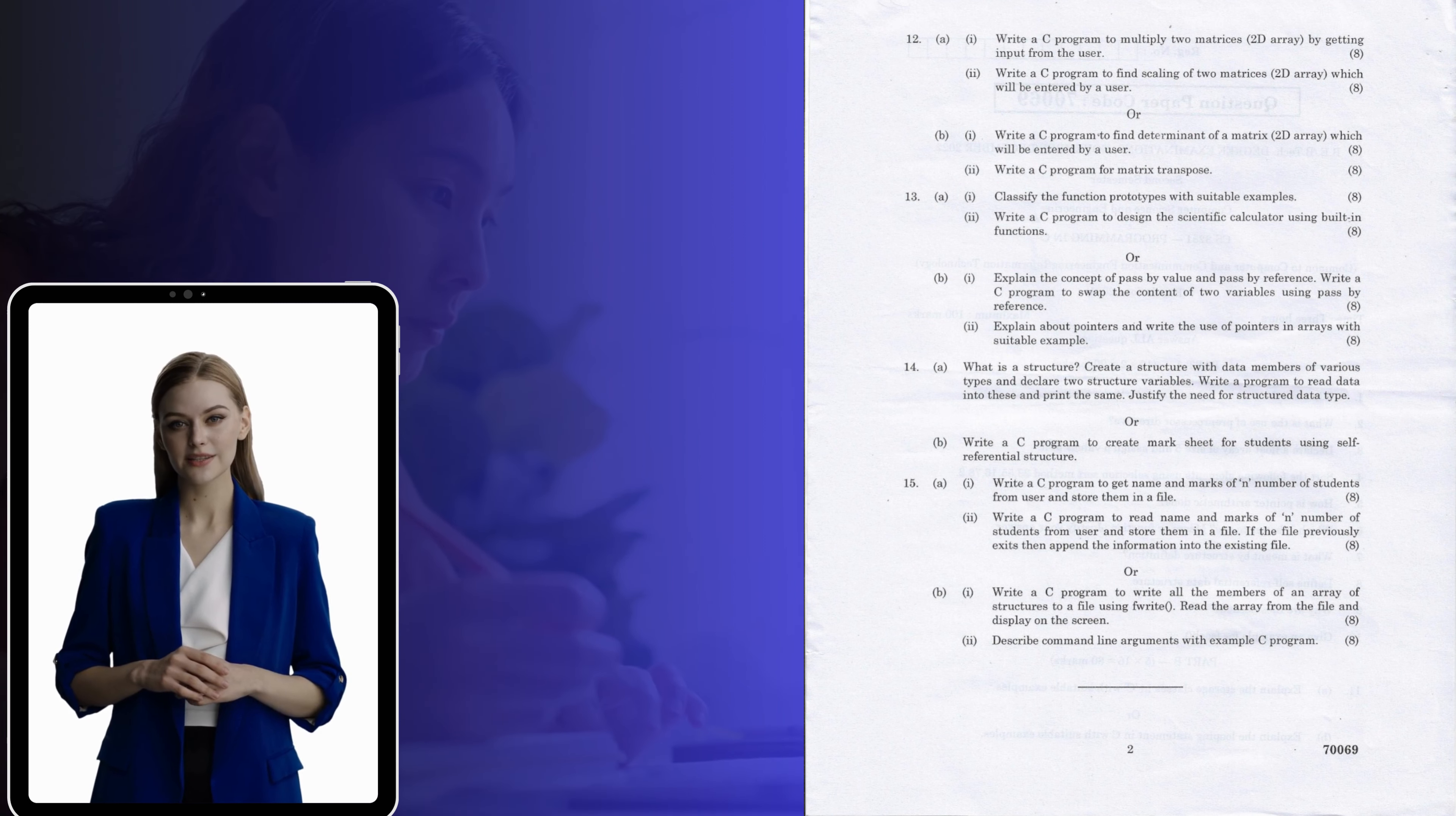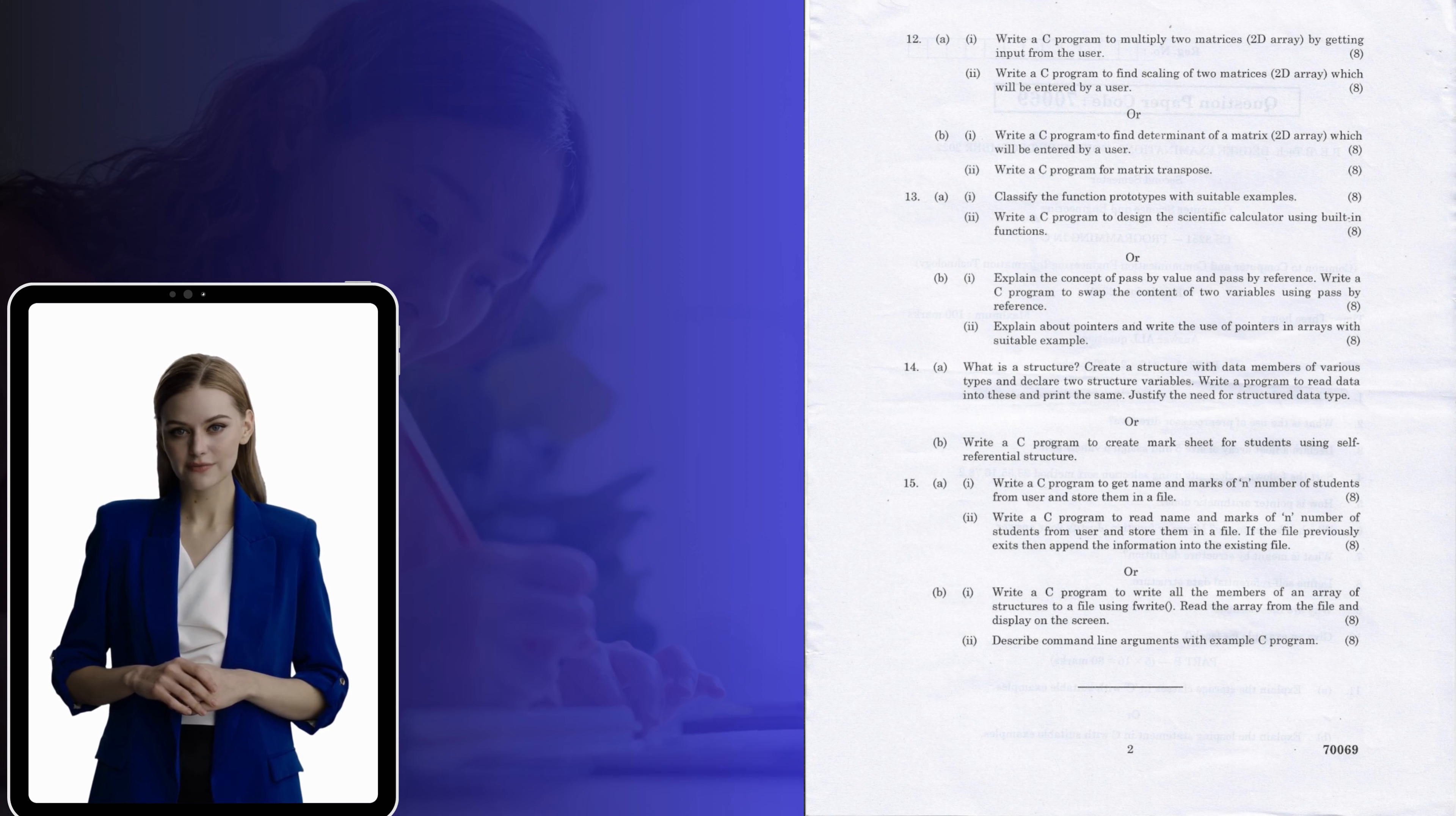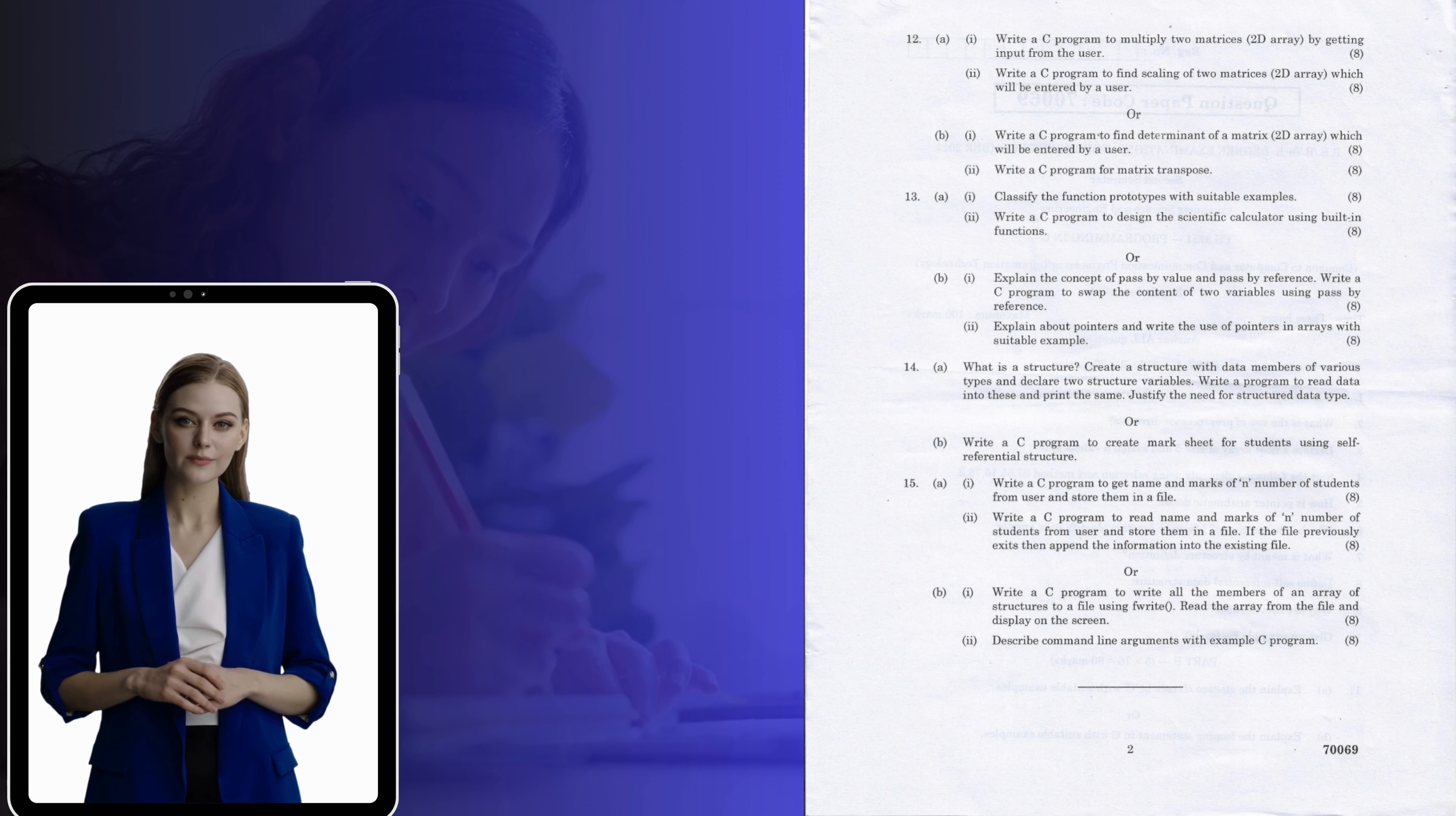12 A. i. Write a C program to multiply two matrices, 2D array, by getting input from the user. ii. Write a C program to find scaling of two matrices, 2D array, which will be entered by a user. Or B. i. Write a C program to find determinant of a matrix, 2D array, which will be entered by a user. ii. Write a C program for matrix transpose.